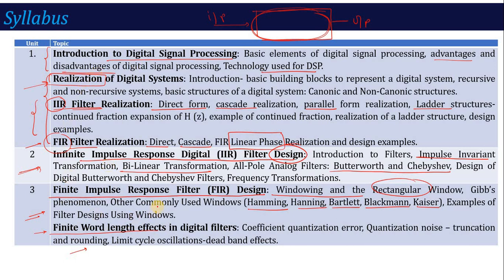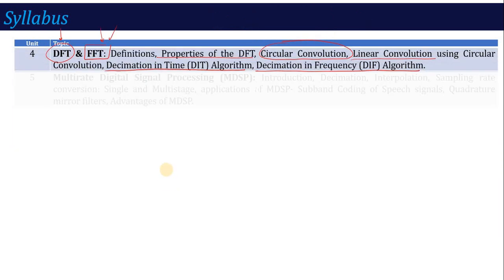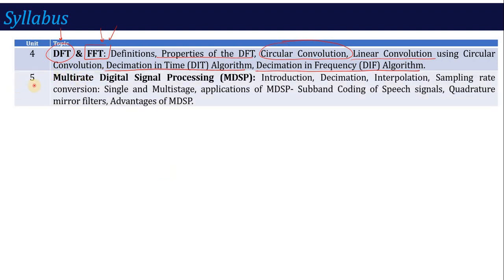Units 1 through 4 are all numerically based, where you can gain marks. The last unit, Unit 5, covers Multirate Digital Signal Processing — processing signals at different frequencies and different rates. The main concepts are decimation, interpolation, and sampling rate conversion: what is sampling, single-stage and multi-stage processing, and the advantages of multirate digital signal processing. Unit 5 is primarily theoretical.